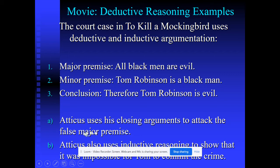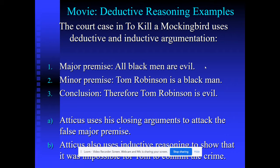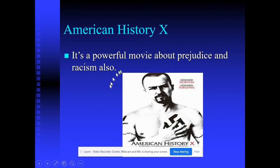The bottom line of this book is Atticus uses his closing arguments to attack the major premise. He said look, this is crazy false. It turns out in the movie, Tom Robinson never committed the crime, and I think he got killed. So the movie's about racism, and the lawyer basically defuses that. Atticus uses inductive reasoning and shows that it was impossible for Tom to have committed the crime. It's a movie that promotes a bad idea in the sense that you can weave through it and get straight at the core of it and say, look, racism sucks. It shows us what not to do. And to be fair, you can insert any color you want here.